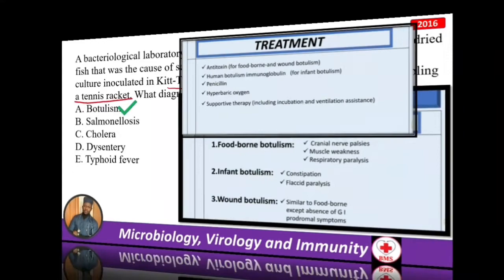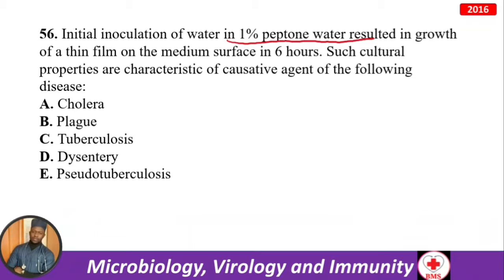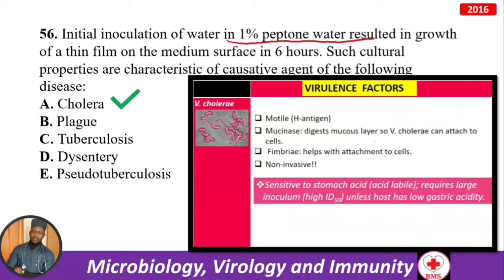Initial inoculation of one percent peptone water resulted in growth of a thin film on the medium surface in six hours. Such cultural properties are characteristic of the causative agent of cholera. One percent peptone water is specific for cholera.